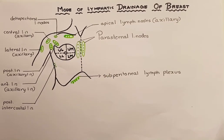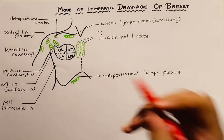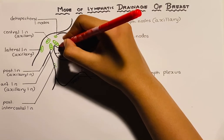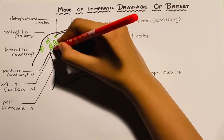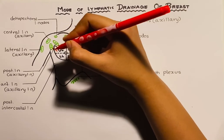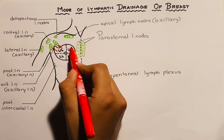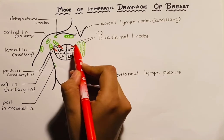Now, the lymph from the upper lateral quadrant is drained into the anterior and posterior group of axillary lymph nodes. Whereas the lymph from the upper medial quadrant is drained into the parasternal group of lymph nodes.